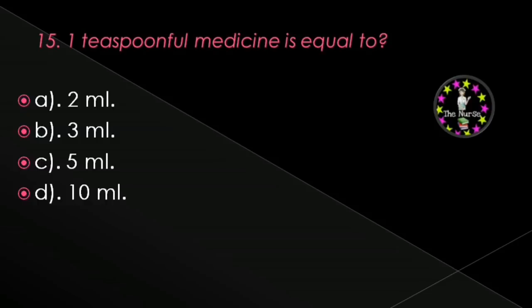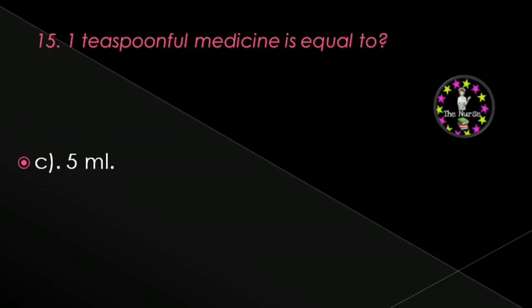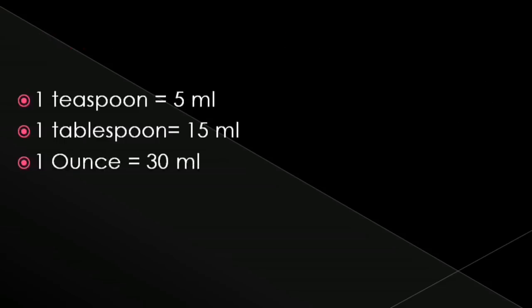Next question: One teaspoon full of medicine is equal to — 2 ml, 3 ml, 5 ml, or 10 ml? Correct answer is 5 ml. One teaspoon equals 5 ml, one tablespoon equals 15 ml, and one ounce equals 30 ml.